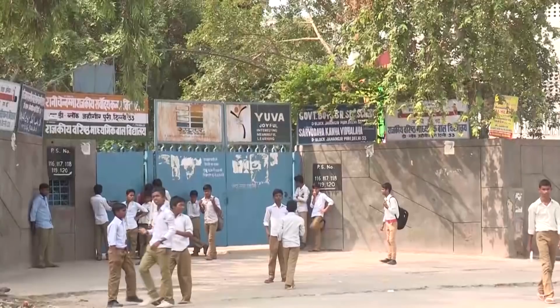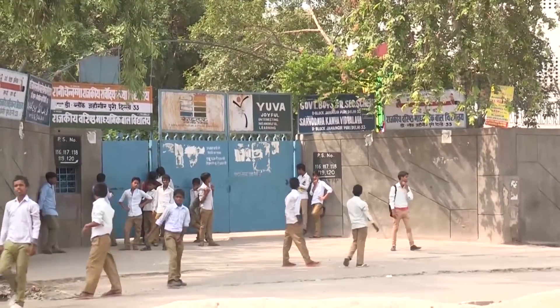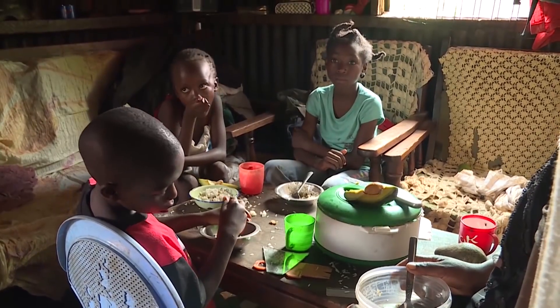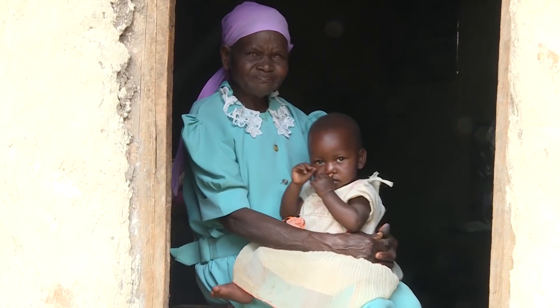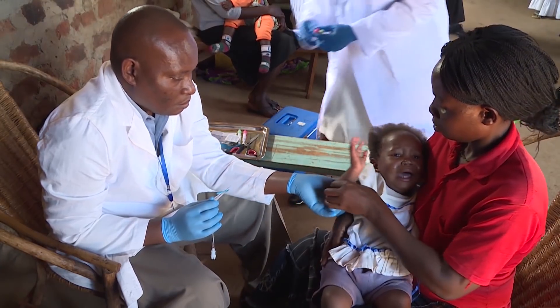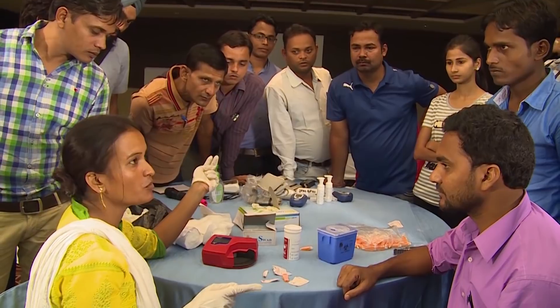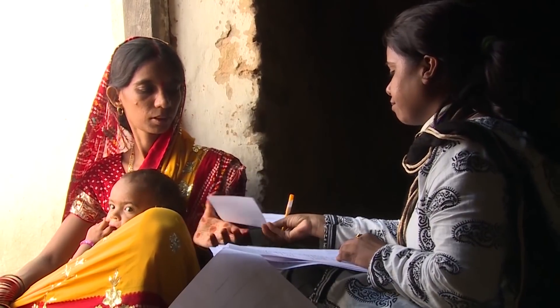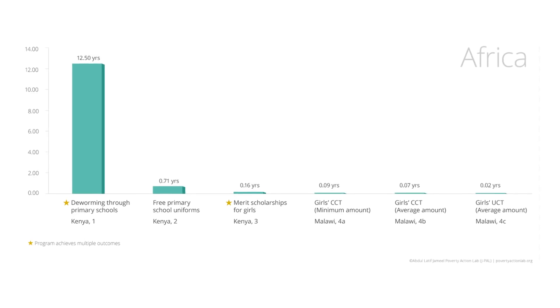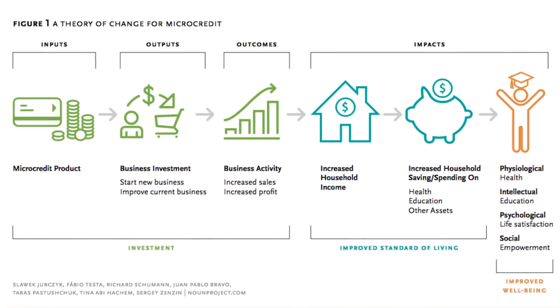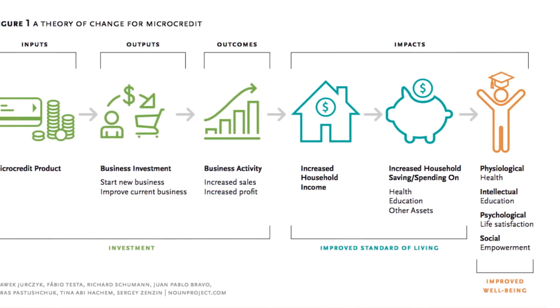Poverty, access to education, malnutrition — these are just a few of the world's most pressing problems. There are thousands of social programs all over the world dedicated to solving these challenges. But how do you evaluate their effectiveness? How do you ensure that policies used to tackle these problems are backed by scientific evidence? And how do you determine which methods are most useful in addressing these problems and yielding the best outcomes?